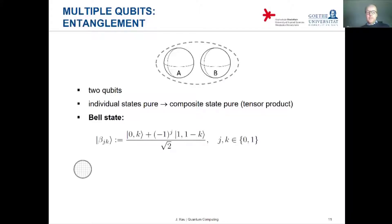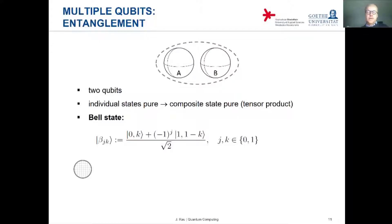In the composite Hilbert space, you can construct arbitrary superpositions of these product states. A particularly important family of such superposition states of two qubits are the Bell states. Here I show the general definition of the Bell states. They have two indices, J and K. Each index can take two values, 0 or 1, so in total you have four Bell states.